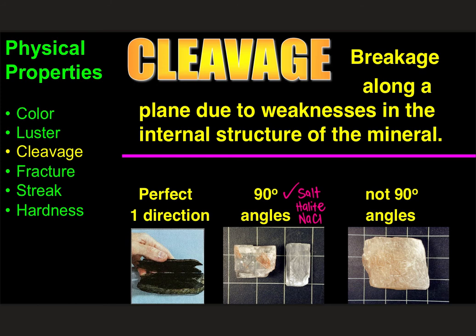Halite — one sodium and one chlorine atom bonded together — has that 90-degree angle of cleavage, making it easy to identify in the field: you can taste it, and you can see the 90-degree angles. You can have something that looks almost identical but whose angles are not 90 degrees — maybe more like 60 and 120 degrees — and that might be calcite, a very common mineral that looks just like table salt except for those slightly different cleavage angles. So we look closely at exactly what the cleavage looks like — for some minerals it tells you exactly what you're looking at.